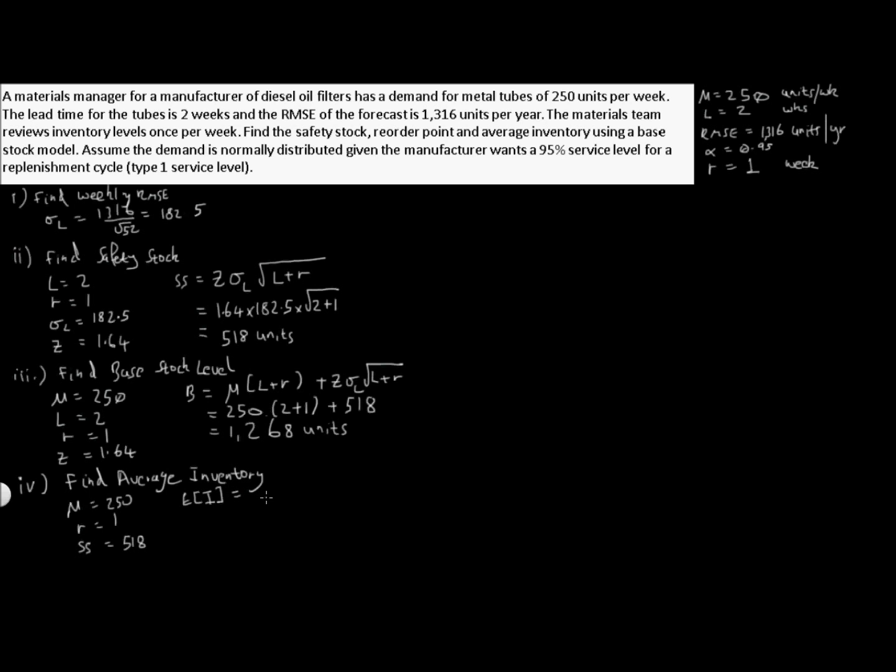Now our equation is mu times R all divided by 2 plus Z sigma L square root of L plus R, so our safety stock. So this is 250, our review period is 1 week, so that's times 1, divide this all by 2, plus safety stock which is 518. And calculating through we get 643 units.